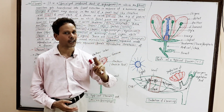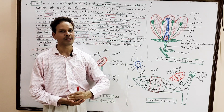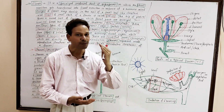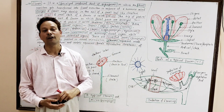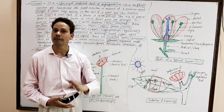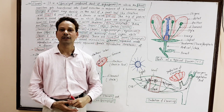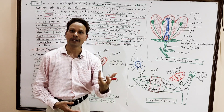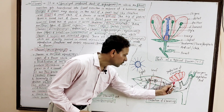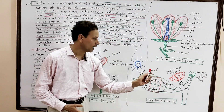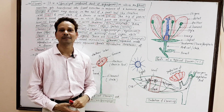A flower is a specialized condensed shoot, or it is a modification of stem. A flower represents the reproductive structure of angiosperms — the flowering plants. For the induction and development of a flower, it is a synthesis that occurs in response to a chemical substance, and that hormone is florigen.